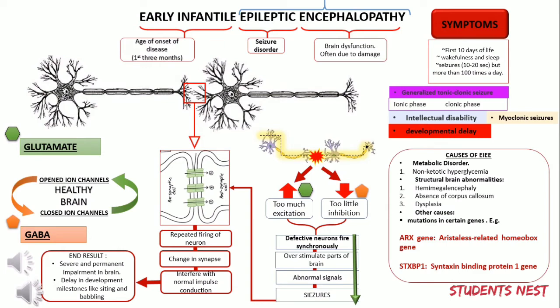To recap: Early Infantile Epileptic Encephalopathy, or EIEE, is characterized by unprovoked and recurrent seizures during early infancy which usually result in brain damage. Seizures may last about 10–20 seconds but there may be more than 100 per day, occurring during wakefulness and sleep. Since onset is within the first 3 months — a critical developmental stage — abrupt and repeated neuronal firing during this phase leads to brain impairment, giving rise to intellectual disability, developmental delay, and related problems.